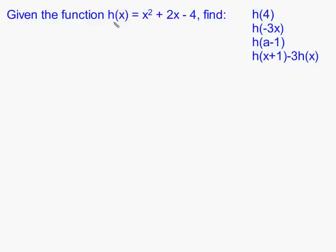In this problem, we're given a single function h of x, and we're asked to do four different problems. The first one is the easy one — it's actually quite a bit different than the last three. h of 4 simply means to replace our input value, or variable x, with 4. I'm going to explain it in a way that is most conducive to explaining the following problems, not just the easiest one.